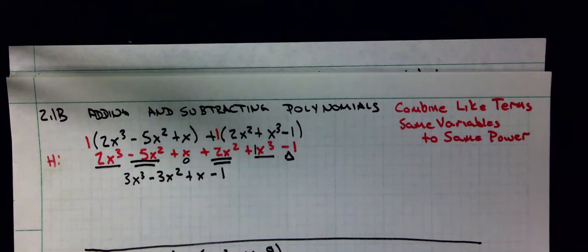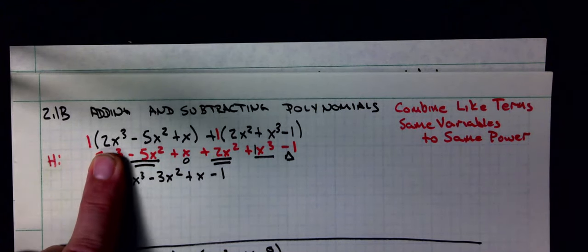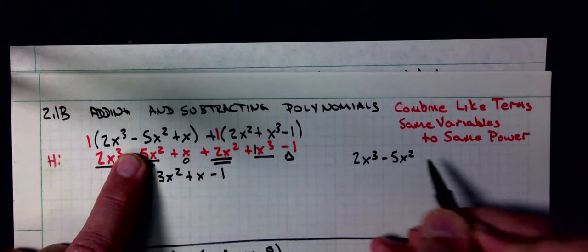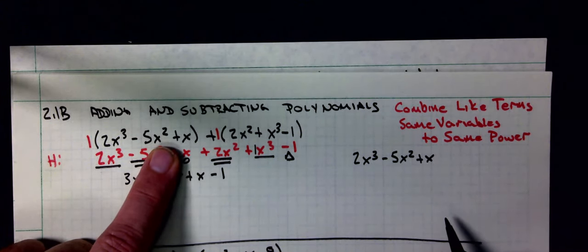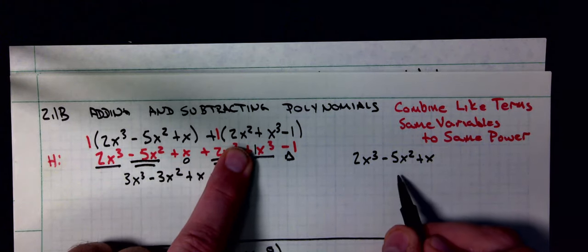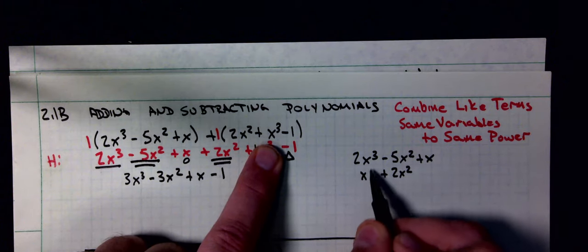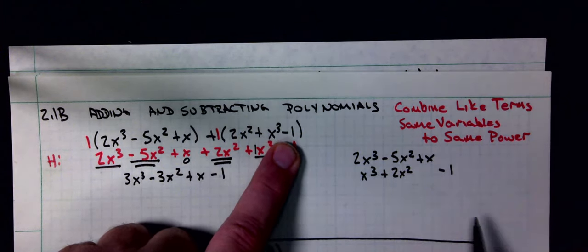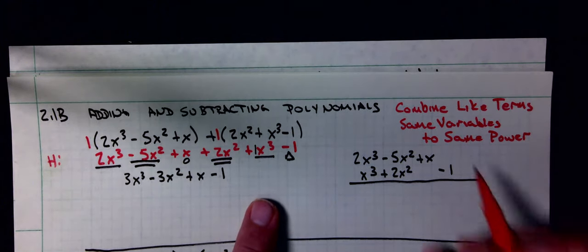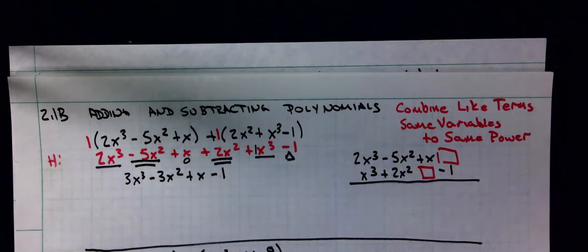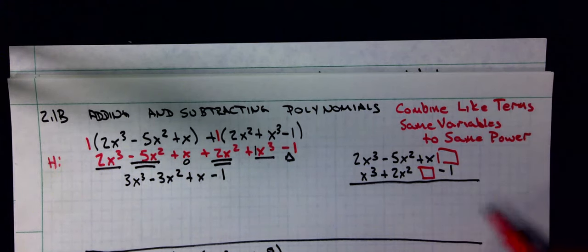The other way you can do it is do it vertically. When you do it vertically, you leave spaces for any missing powers. I'm going to do this vertically. 2x³ minus 5x² plus x. I'm going to be adding 2x², 1x³ to minus 1. Notice I left a blank here so that the like terms are right on top of each other.